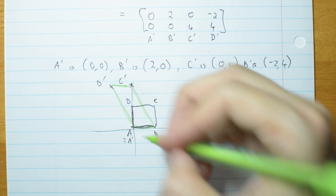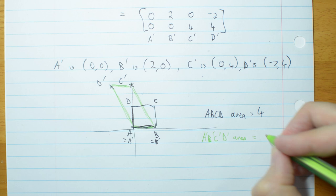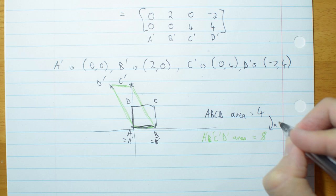Well, it's a parallelogram so I want base times height. It's 2 times 4, which is 8. So this area has doubled.